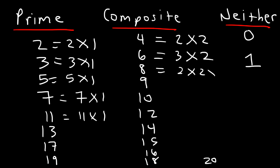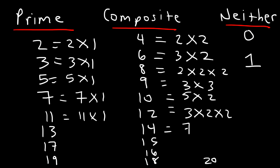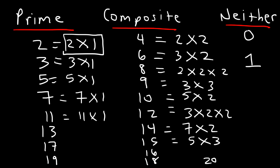If a factorization includes 1, the number is prime. All prime numbers will have 1 as a factor — that's the key difference separating prime numbers from composite numbers. Eight is 2 times 2 times 2; 9 is 3 times 3; 10 is 5 times 2; 12 is 3 times 4, and 4 breaks down to 2 times 2; 14 is 7 times 2; 15 is 5 times 3. Remember: 0 and 1 are neither prime nor composite.